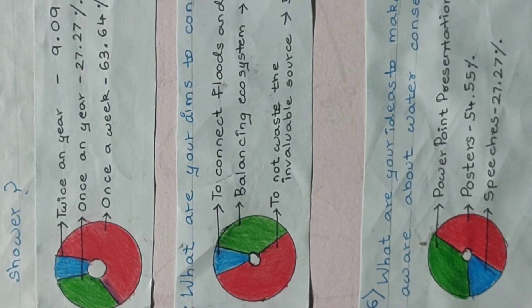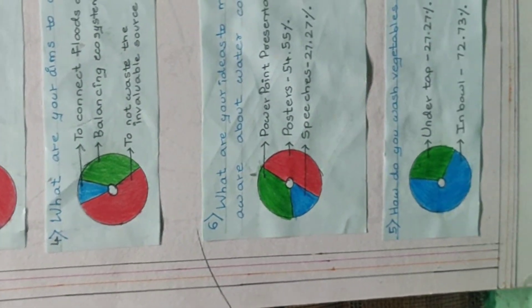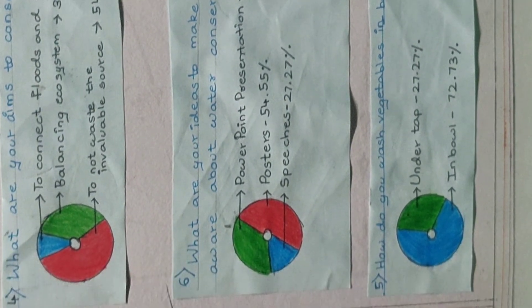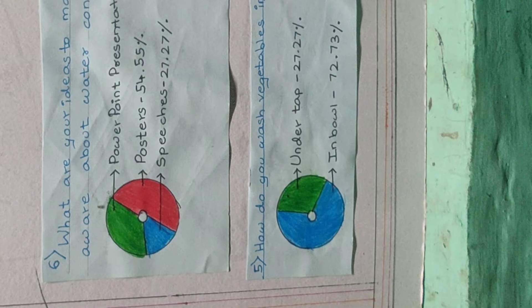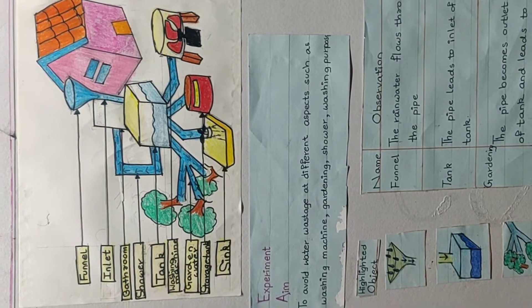What are your aims to conserve water? To not waste the invaluable resource was the answer supported by 54.55%. What are your ideas to make people aware about water conservation? Posters was the answer supported by 54.55%. How do you wash vegetables — under a bowl or tap? In a bowl was the answer supported by 72.73%. The aim of our experiment is to avoid water wastage in various aspects such as washing machine, gardening, shower, and washing purposes.